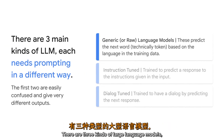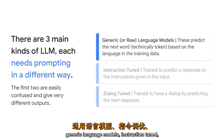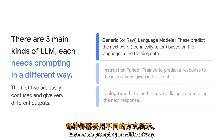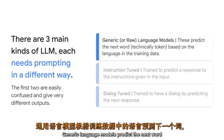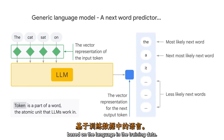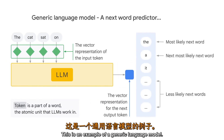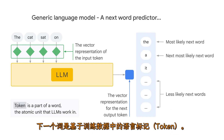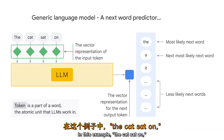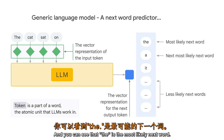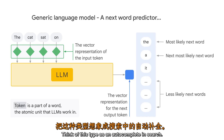There are three kinds of large language models: generic language models, instruction tuned, and dialogue tuned — each needing prompting in a different way. Generic language models predict the next word based on the language in the training data. For example, given 'the cat sat on,' the next word should be 'the,' and you can see that 'the' is the most likely next word. Think of this type as autocomplete in search.